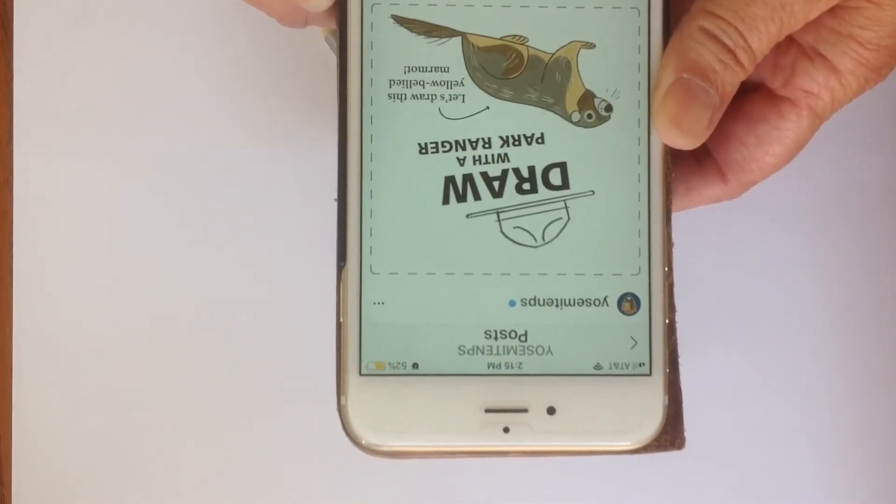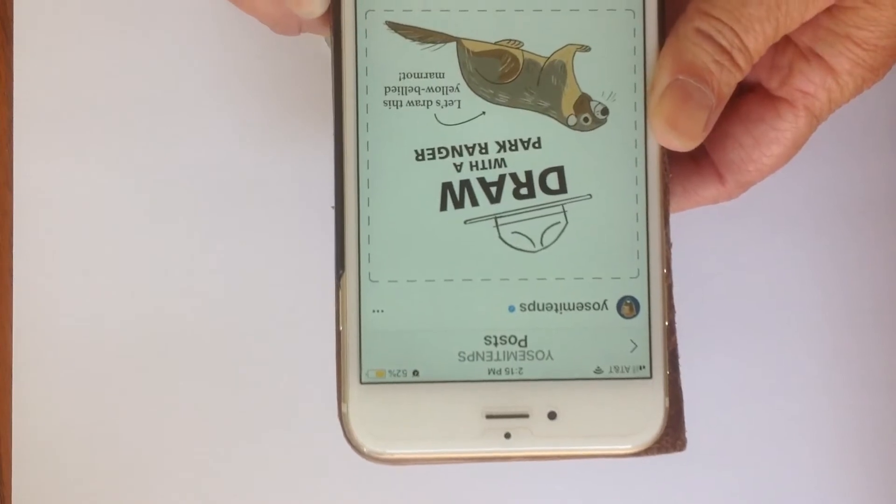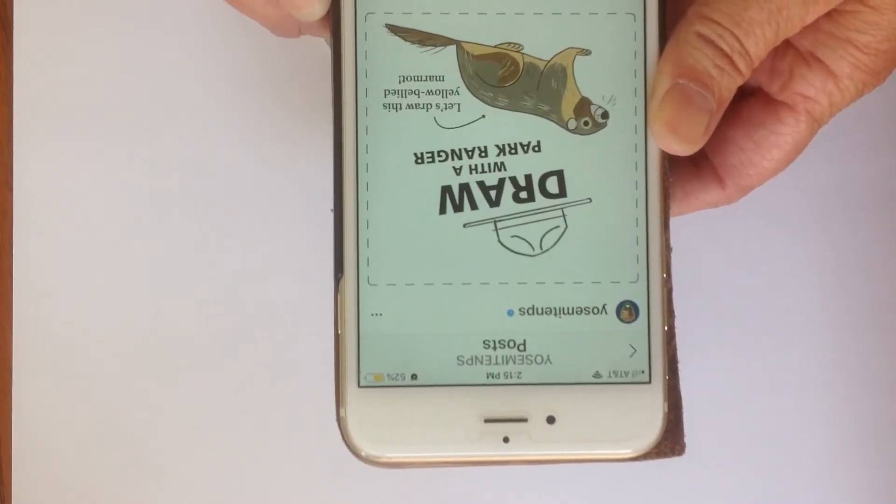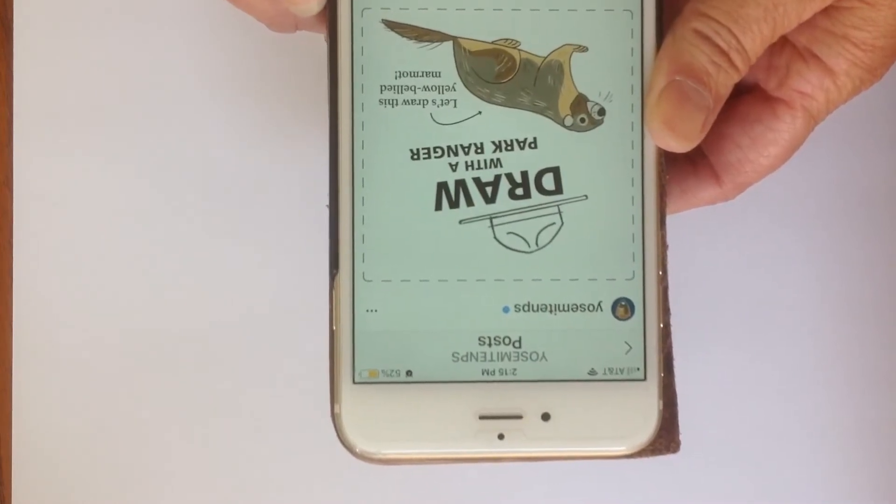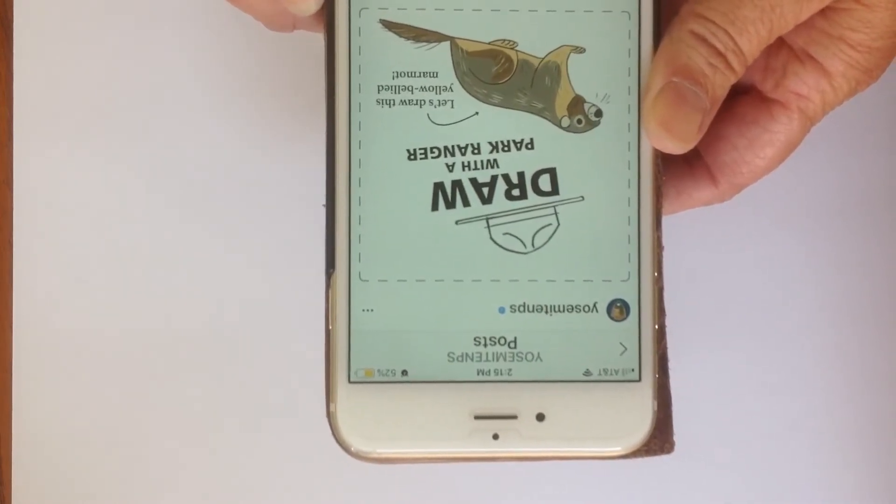You can draw a pika, which are really cute and furry. You can draw a black bear. You can draw a red-legged frog. But today we're going to draw a yellow-bellied marmot.